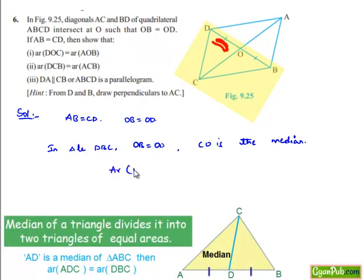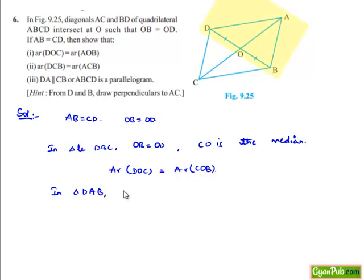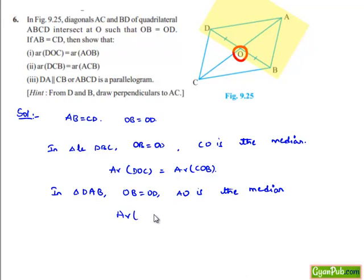As CO is a median, it divides the area of triangle DCB into two equal halves — that is, area of triangle DOC is equal to area of triangle COB. Again, considering triangle DAB where OB is equal to OD, AO is a median. Therefore, area of triangle AOD is equal to area of triangle AOB.